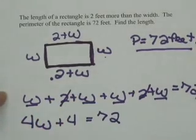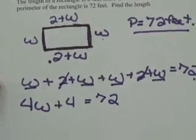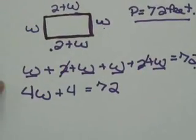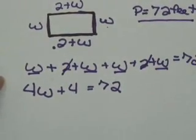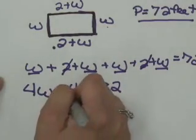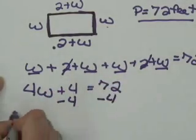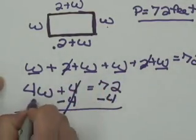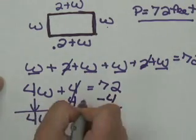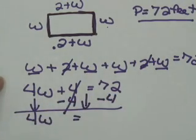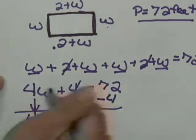Now that I've combined all like terms, I need to solve for W. The way that I solve for W is to get it by itself. First, I need to subtract by 4 on both sides. It's going to cancel on the left. I'll bring down my 4W, bring down my equal sign, and bring down my answer from 72 minus 4, which is 68.